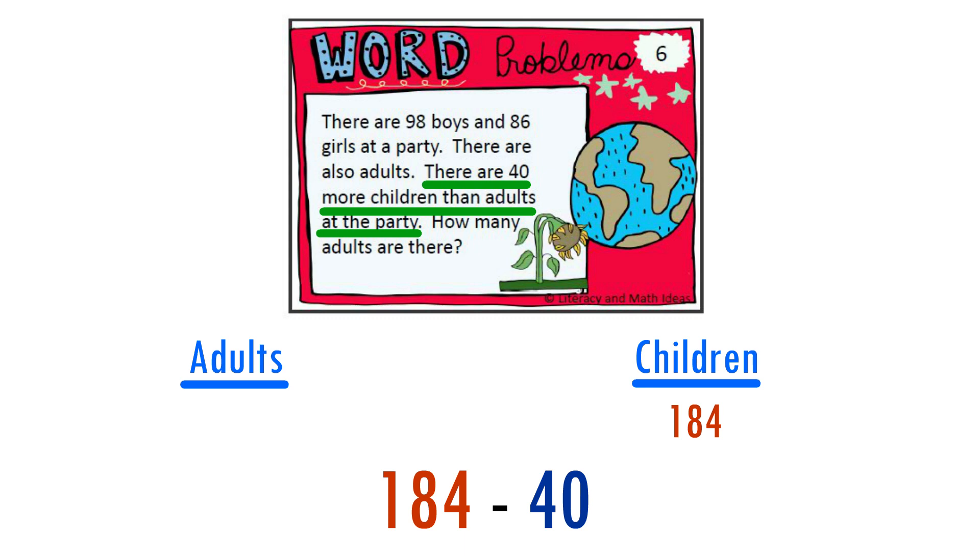It looks like 184 minus 40 is 144. This tells us that there are 144 adults at the party.